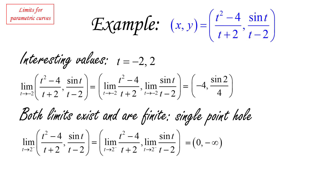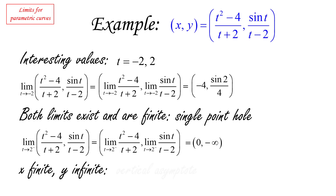What does that mean? It means that as t is approaching two from the left, the x-coordinate is approaching zero, but the y-coordinate is going all the way down to negative infinity. We've seen what that means before — that is a vertical asymptote. Let's look at the graph of this curve as produced by a calculator and see if what we observe is consistent with the information we found.